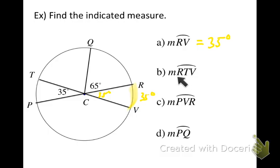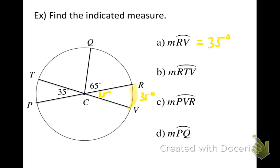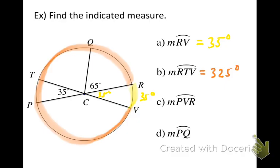Next is arc RTV. Notice this is named using three letters, so points R and V are the endpoints, but we're not going the short way. When you see just two letters, go the short way; when you see three letters, make sure you go through that middle point. So we go from R through point T to V — that's a major arc with the same endpoints as the minor arc we just worked with. Those two arcs have to add up to 360 degrees, so we subtract 35 from 360 and get 325 degrees.